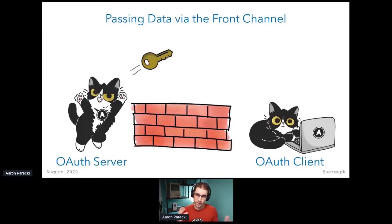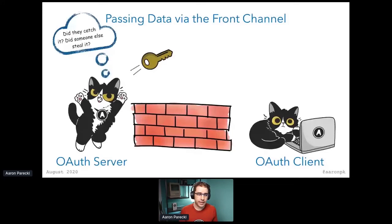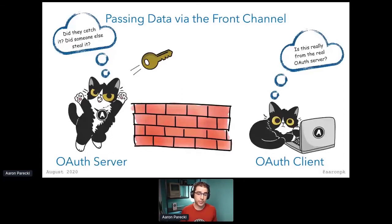The front channel is the idea of using the browser's address bar to move data around. I like to think of that as essentially throwing it over a wall and hoping someone on the other side catches it. The OAuth server is trying to send this access token over to the OAuth client, but they can't see over the wall, so they can't actually see if it was caught. The thing receiving that data doesn't actually know if it's coming from the real OAuth server or not. So we're missing a lot of visibility whenever we send data over the front channel, and the problem with the implicit flow is that the access token is sent in the front channel.